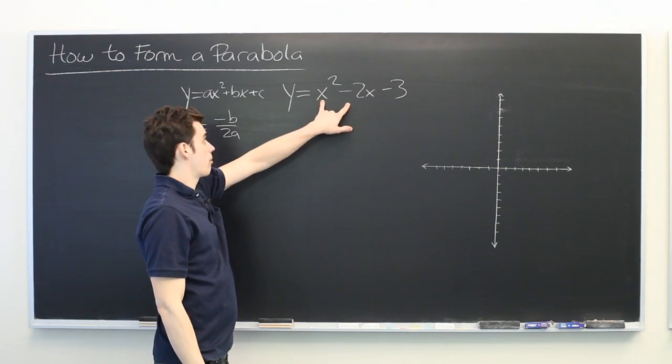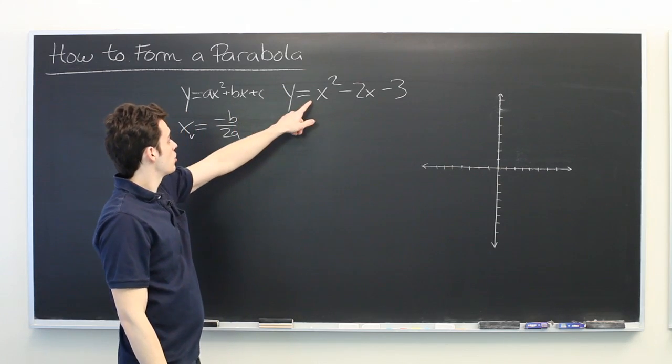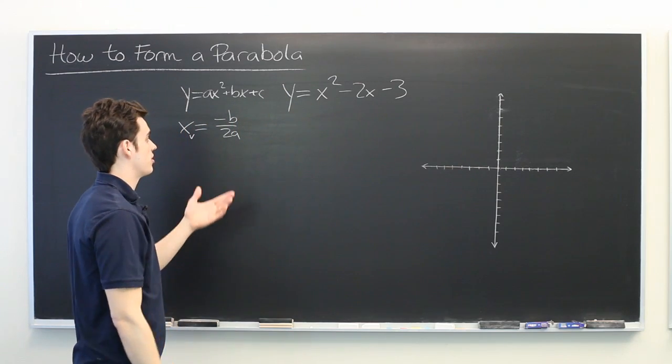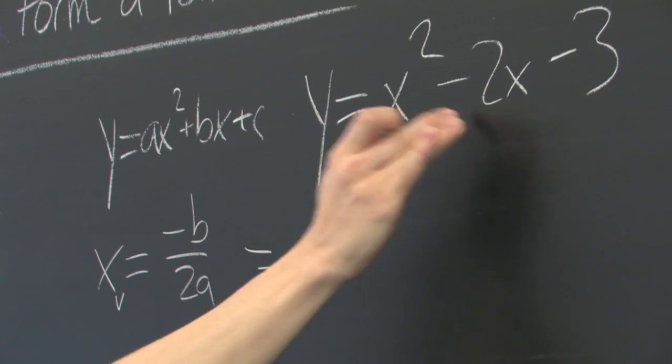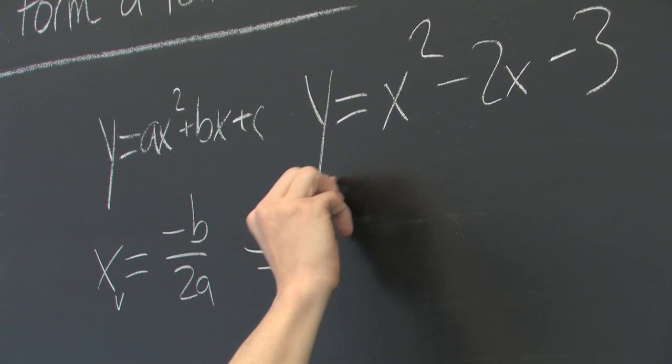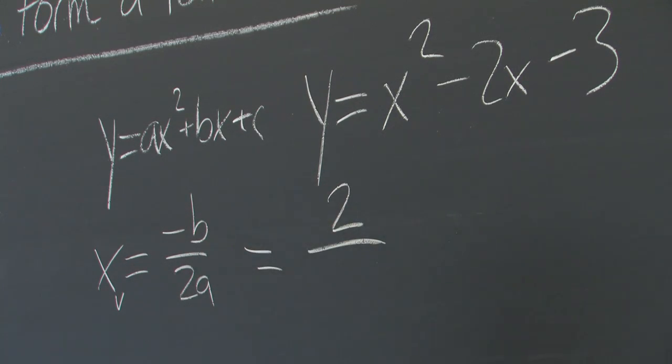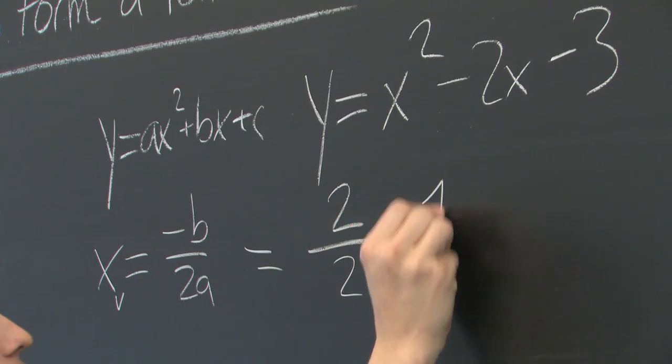So here, our parabola is already written in this form, so we can simply take the coefficients that we already have and plug it into this formula. Our b is negative 2, so negative negative 2 is positive 2. And our a is 1. So we get 2 over 2, which simplifies to 1.